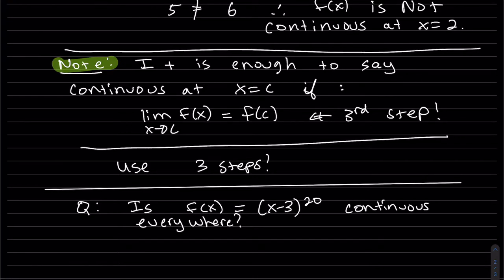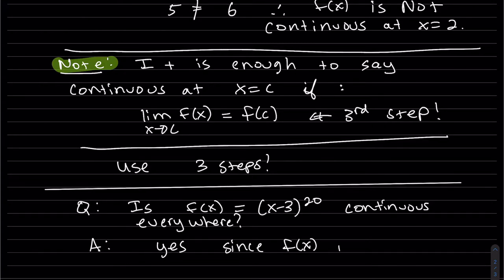Here's a question: is the function f of x equals (x minus 3) to the 20th continuous everywhere? The answer is yes, because that is a polynomial — when you multiply it out, that's a 20th degree polynomial. And we know for every limit we take, it's defined — you just plug in that value.